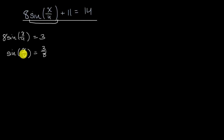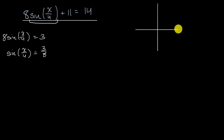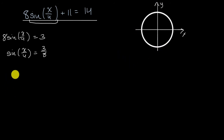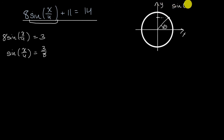Before going further, let's think about whether this gives us the most general solution set. We need to remind ourselves — let me draw a unit circle. If we have some angle theta, we know that sine of theta equals the Y coordinate where the radius intersects the unit circle. And if we add or subtract any integer multiple of 2π, we go all the way around and sine of theta remains the same.